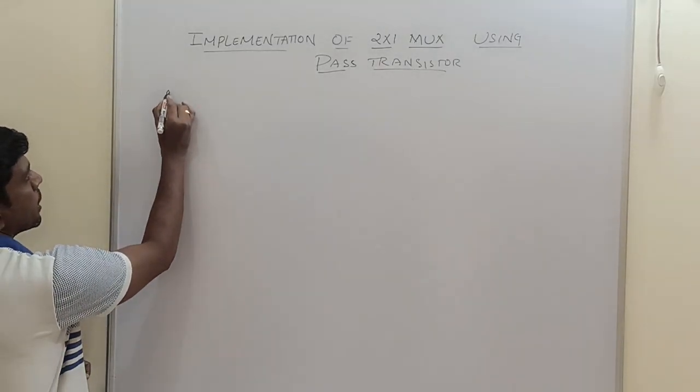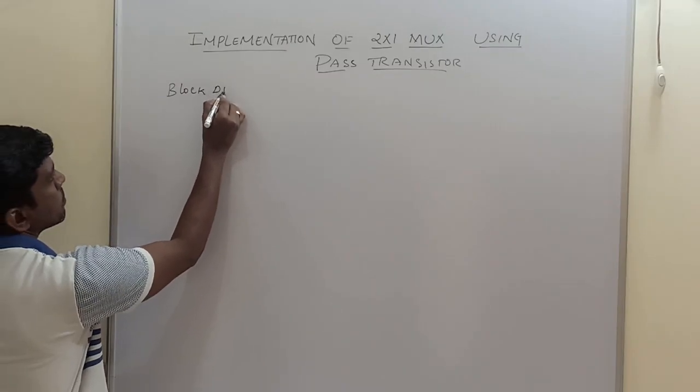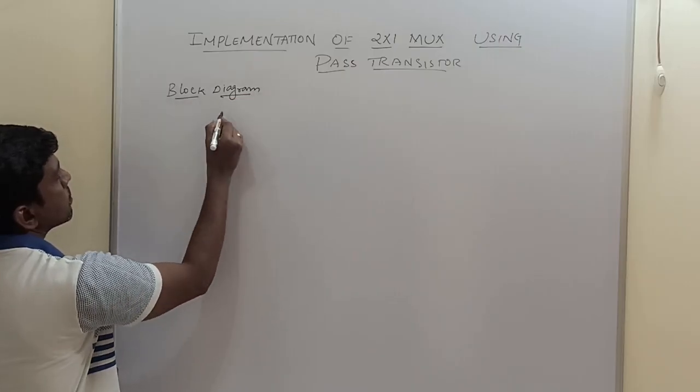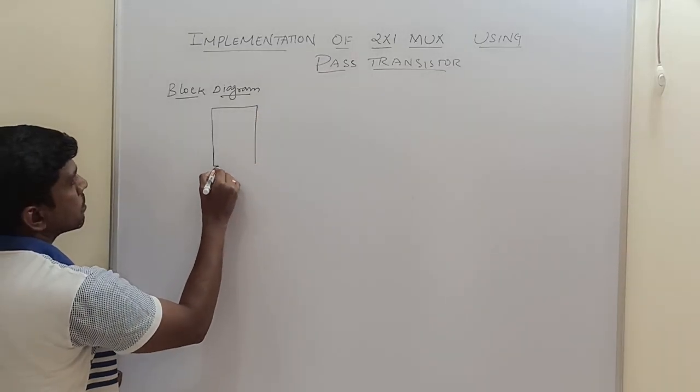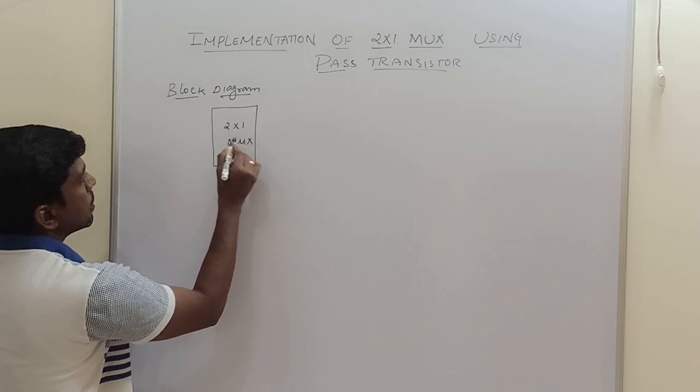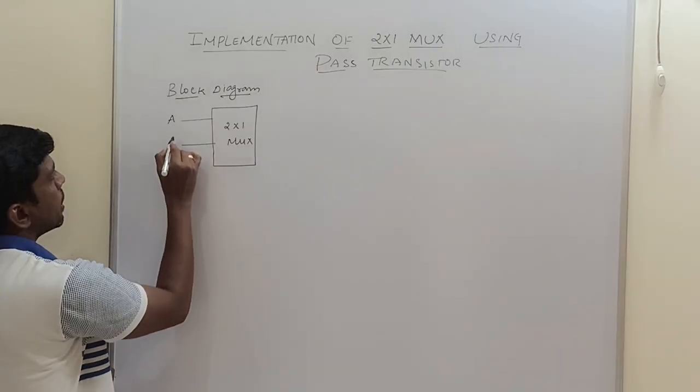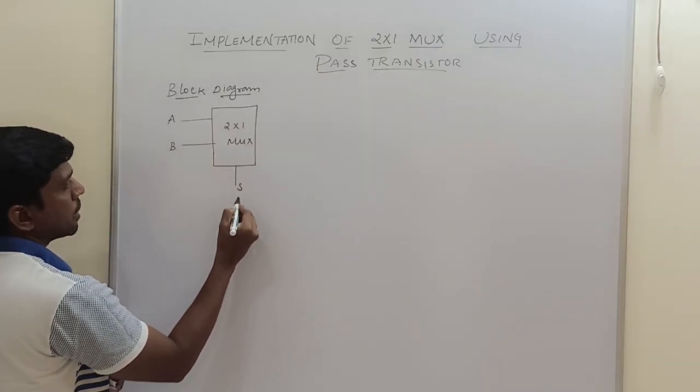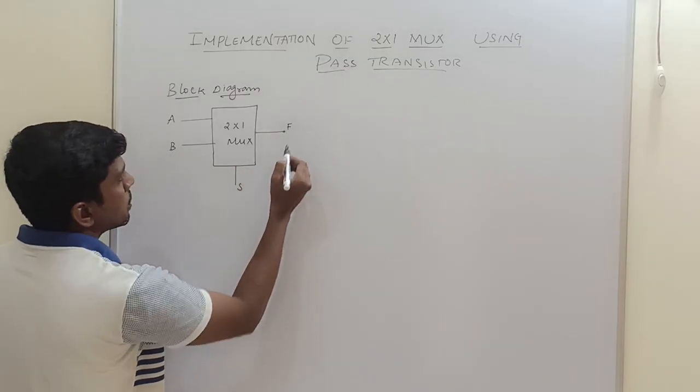So first I will draw the block diagram of 2x1 MUX. So 2x1 MUX has two inputs, namely called A and B, one selection line namely called S, and this is the output F.